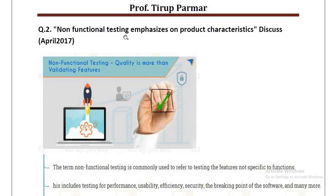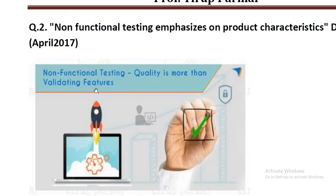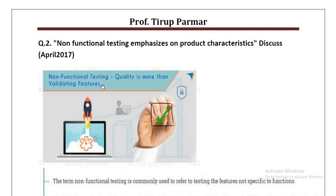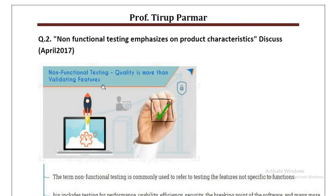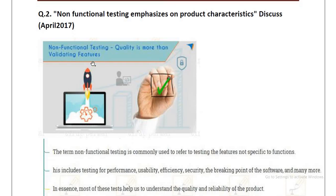The second question we discuss is non-functional testing, which emphasizes product characteristics. Non-functional testing is about quality — quality is more important than validating features. It is not just about whether software functions correctly; it is about how the software performs, meaning the software should not fail or crash. Even if you have passed unit testing, integration testing, and system testing, that does not mean non-functional testing concerns are addressed — non-functional testing mainly focuses on your software's overall quality.